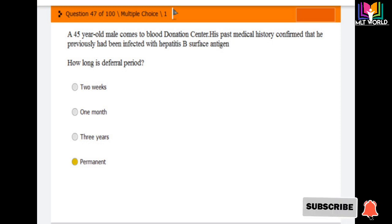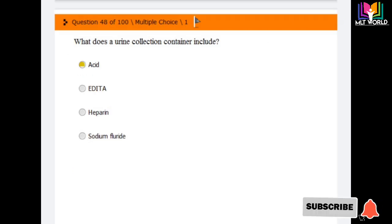How long is the deferred period? Deferred period means stopped period or he cannot give blood. Options are two weeks, one month, three years, permanent. The answer is permanent. If he is confirmed that previously HBsAg antigen was positive, then permanently he is deferred for blood donation. Next question: What does a urine collection container include? Options are acid, EDTA, heparin, sodium fluoride. The answer is acid.